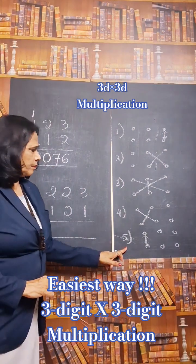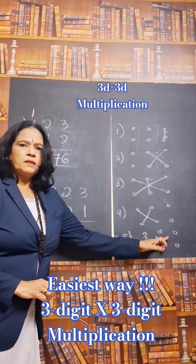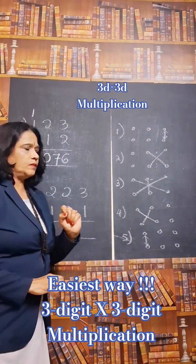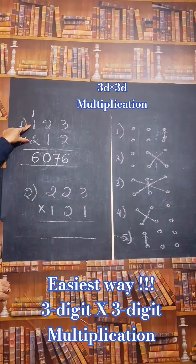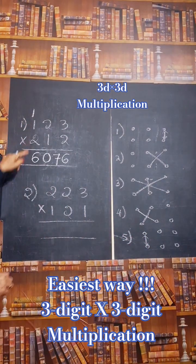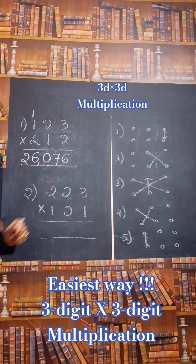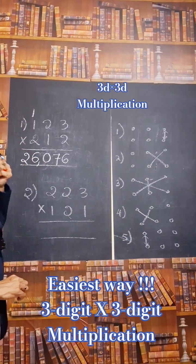See the last step. Don't use the units place number. For tens place number, use only the hundreds place number. So these two numbers. 1 into 2 is 2. So the answer is 26,076. Okay.